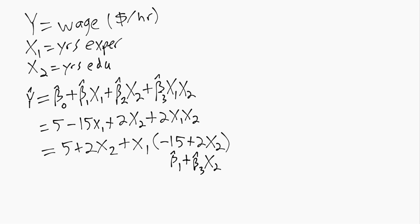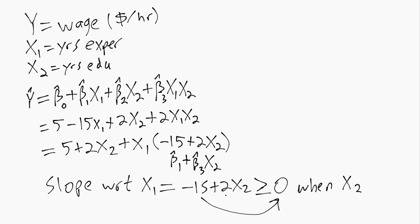In particular, using the numbers in the example, the slope will be positive if 2x2 is greater than 15. So our slope with respect to x1, negative 15 plus 2x2, will be weakly positive when x2, just rearranging, moving the 15 to the other side and then dividing by 2.